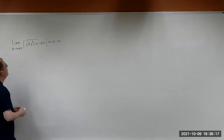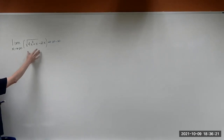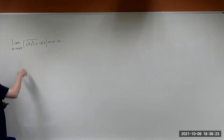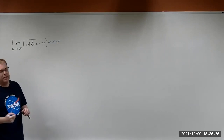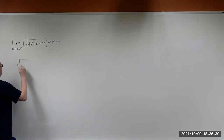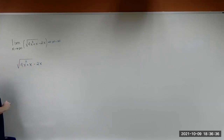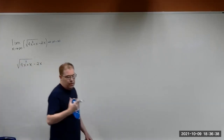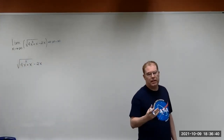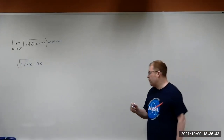So I'm going to work with this function and go ahead and take the limit as x approaches infinity. We have the square root of 4x squared plus x, minus 2x. In order to rewrite this, we're going to use the idea of the conjugate.